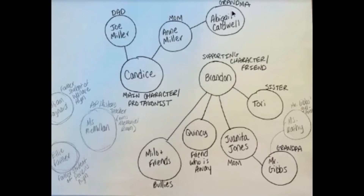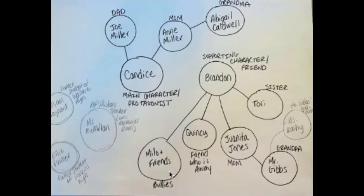Brandon, who kind of turns into Candace's best friend, is a supporting character. His sister is Tori. His friend Quincy is away. Milo and friends also come into play in this section — they are the bullies that go after Brandon. We have the mom, Juanita Jones, or Mrs. Jones. The grandfather, Mr. Gibbs. And we also meet in this section Mr. Gibbs' girlfriend, Miss Kathy, and she has some secrets to unfold.